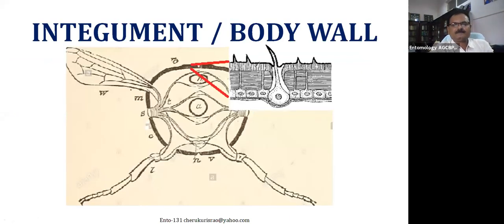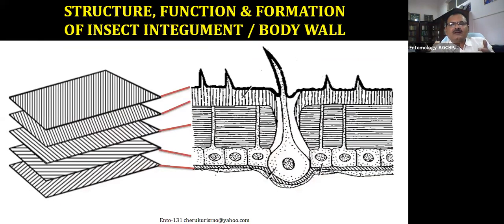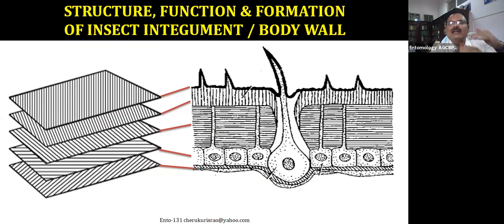This is the structure of the body wall, or the integument. When you cut the insect, you can see the entire insect is surrounded by a very tough body wall, also called the integument. The body wall can be divided into five layers — though there are fundamentally three layers, for easy understanding we consider five layers, which we will discuss in detail.